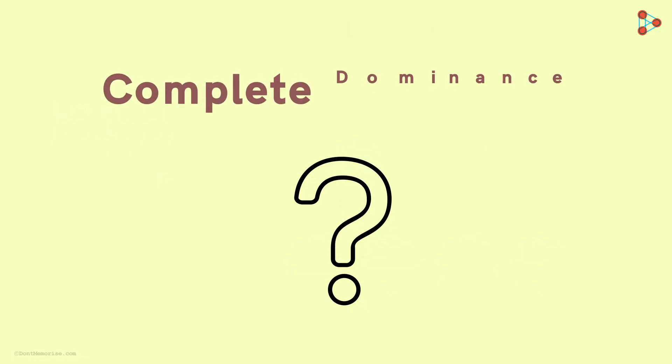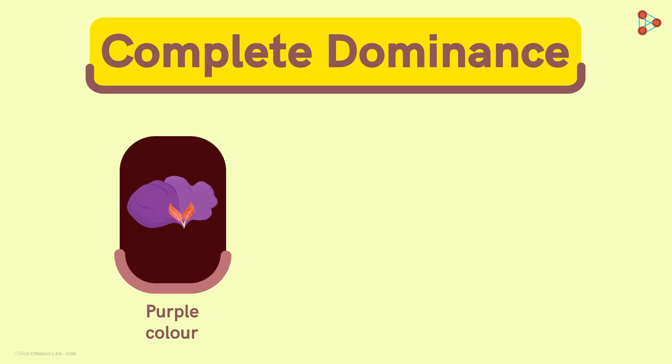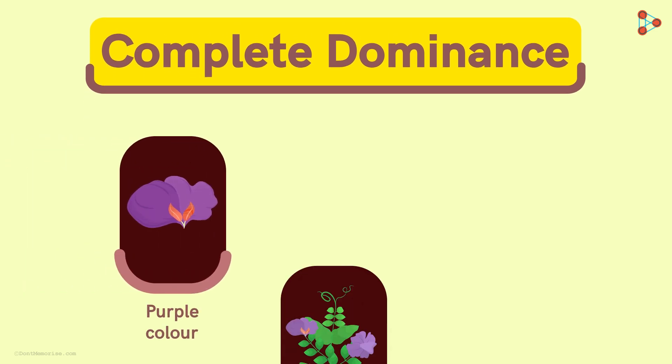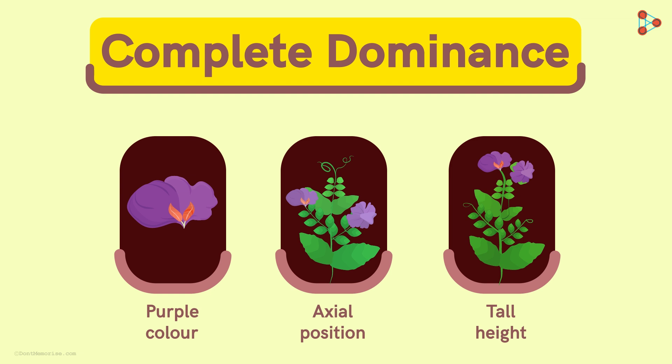Can you state an example of complete dominance found in nature? Most dominant traits fall under this category. For example, the purple colour of flowers, axial flower position, and tall height of the plant — all these characters found in a pea plant fall under the category of complete dominance.